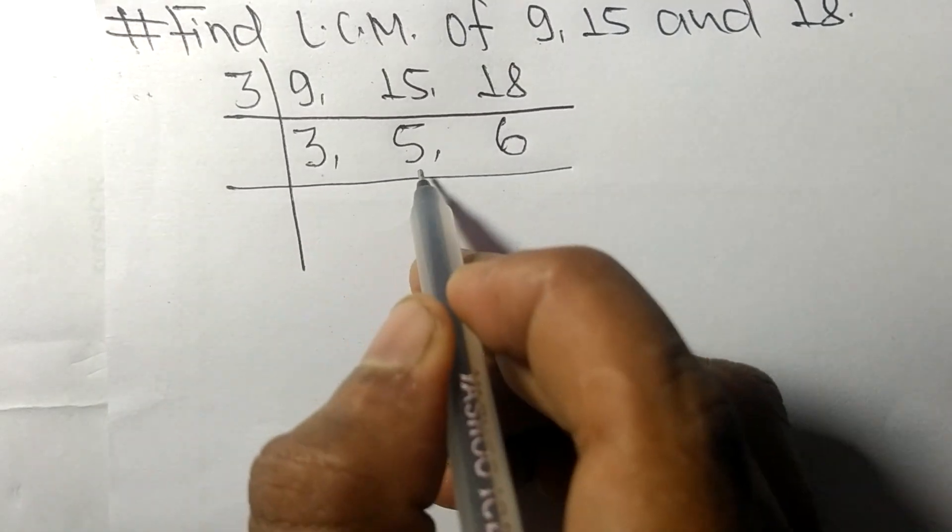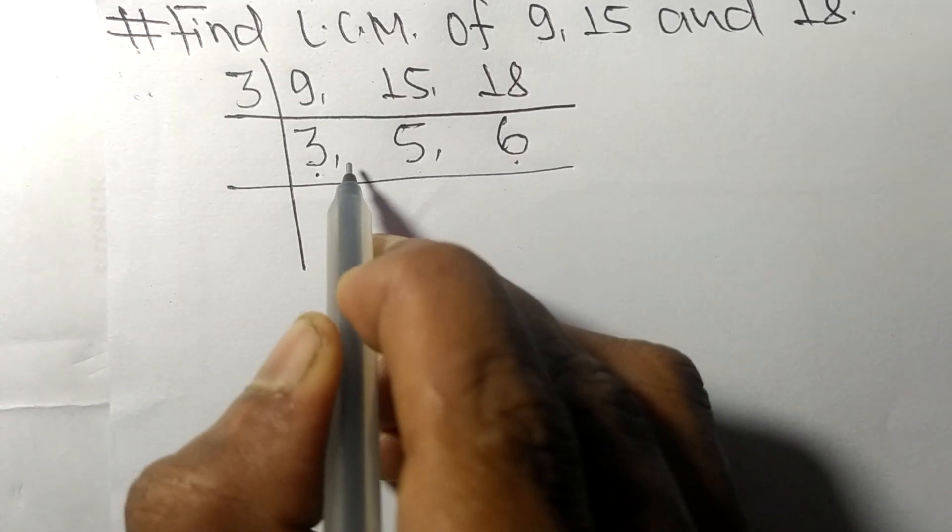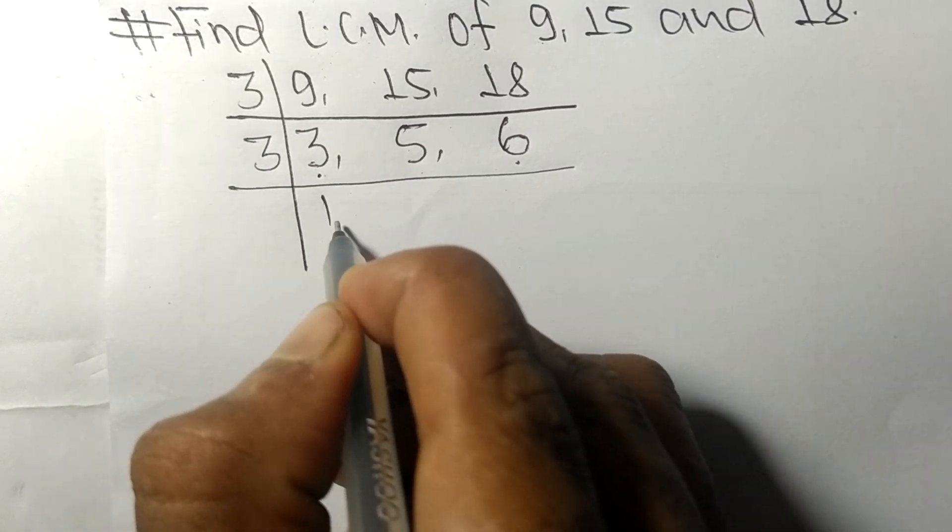So now we got 3, 5 and 6. Among them 3 and 6 are exactly divisible by 3.